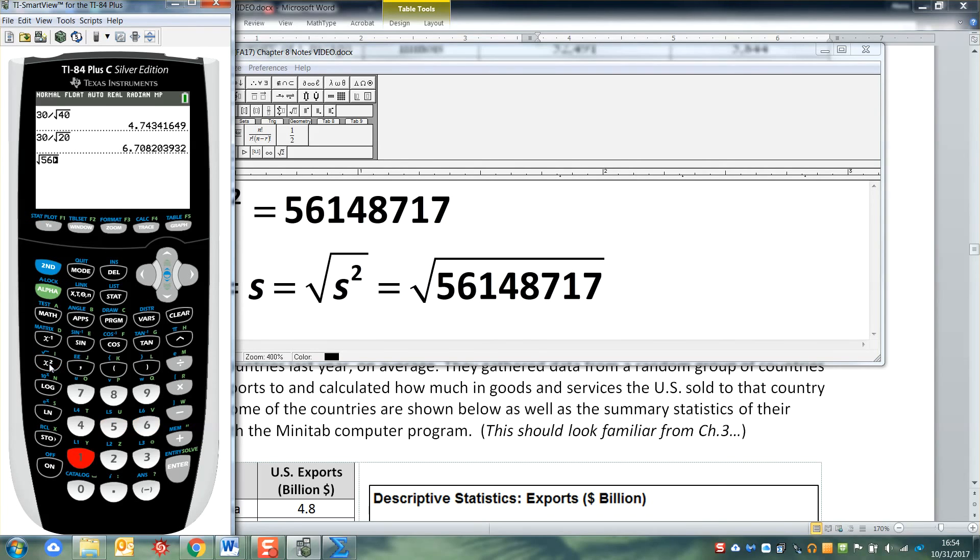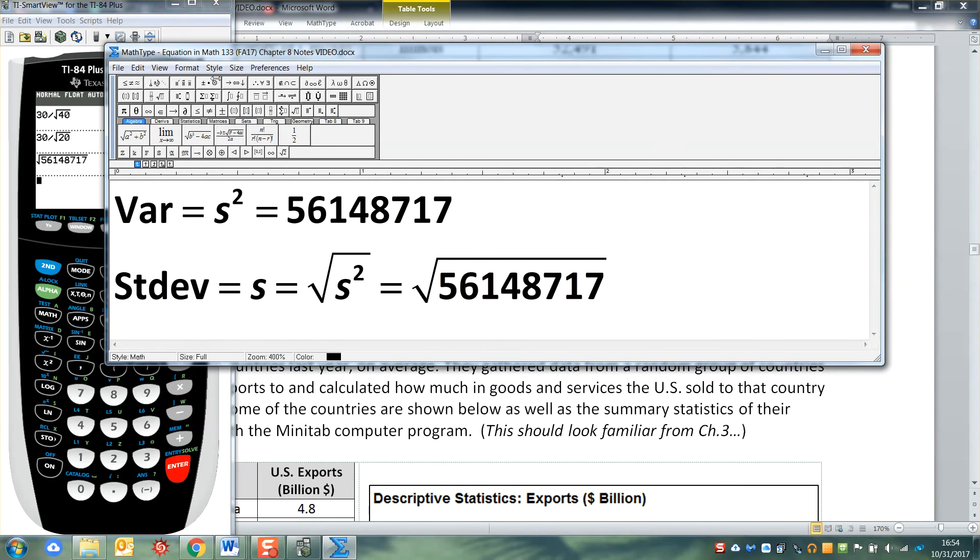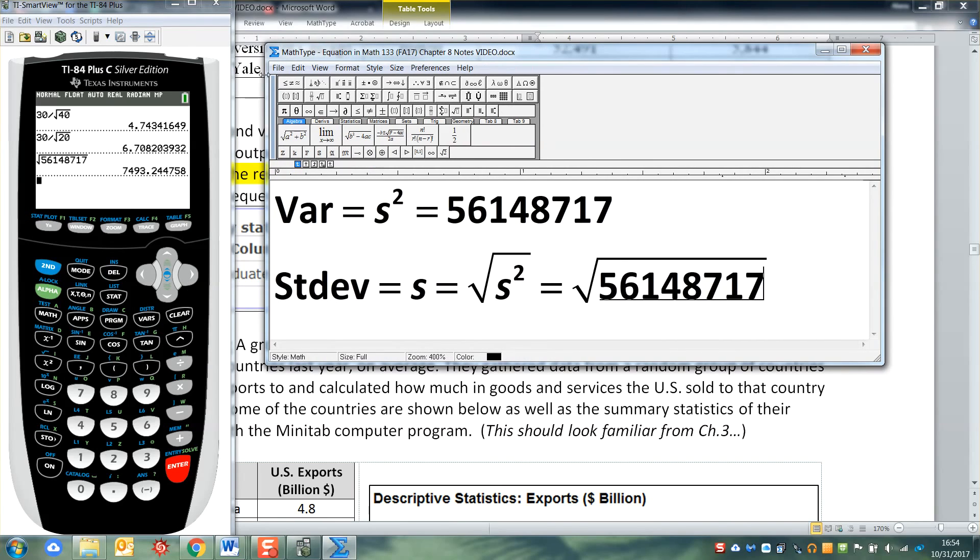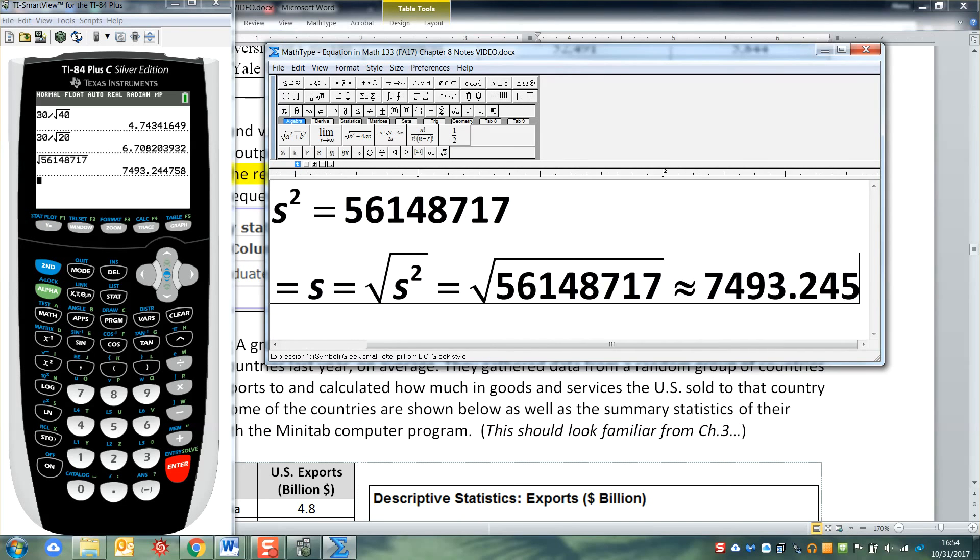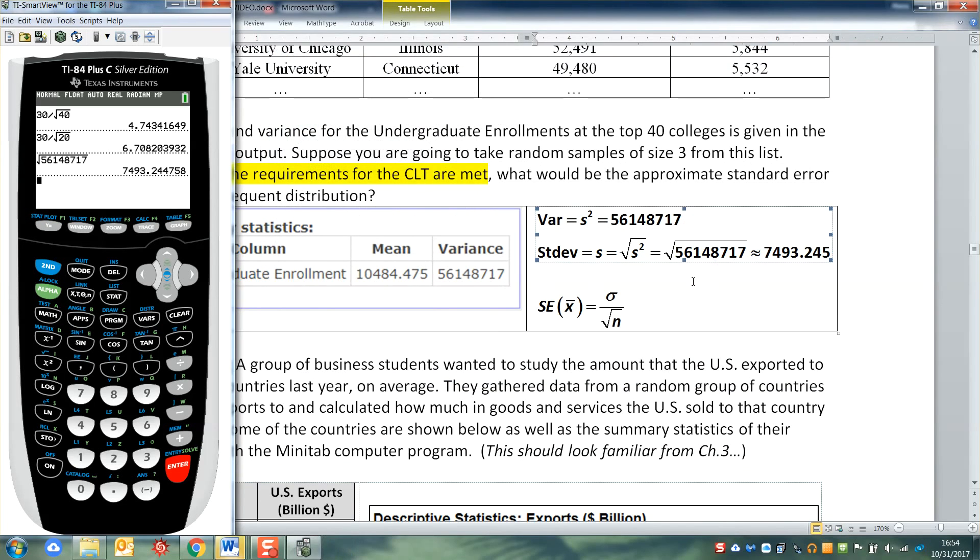So I'm going to take the square root, second square root, 5, 6, 1, 4, 8, 7, 1, 7, enter, and I get 7493.245 or so. So I'm going to type that in. 7493.245. All right, so that's the standard deviation.